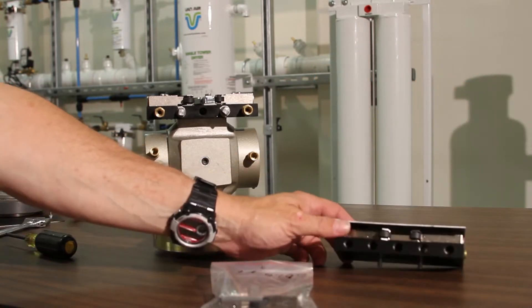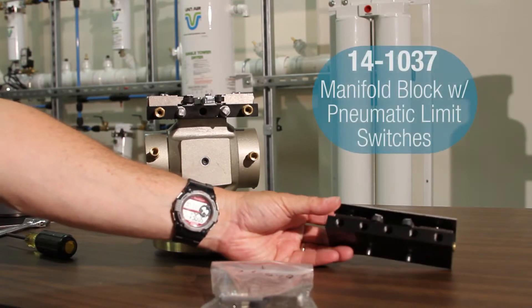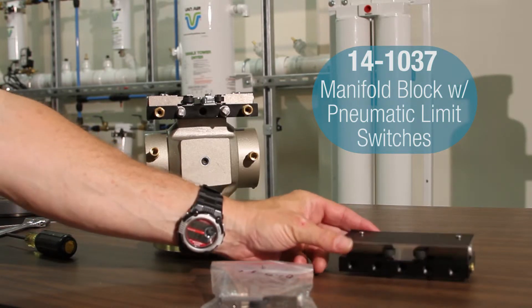Or you can get the pneumatic limit switches with the complete manifold block and pneumatic limit switches, and that's a 14-1037 is our part number on that.